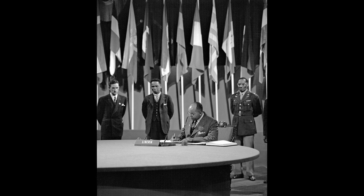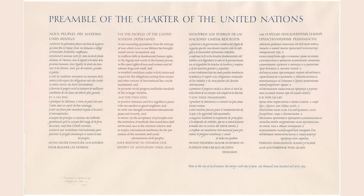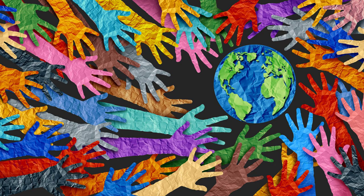One of the defining moments in the history of the United Nations was its founding conference in San Francisco in 1945. Representatives from 50 countries gathered to draft the United Nations Charter, a document that outlined the organization's principles and objectives. The Charter emphasized the importance of international cooperation, respect for human rights, and the peaceful resolution of disputes.